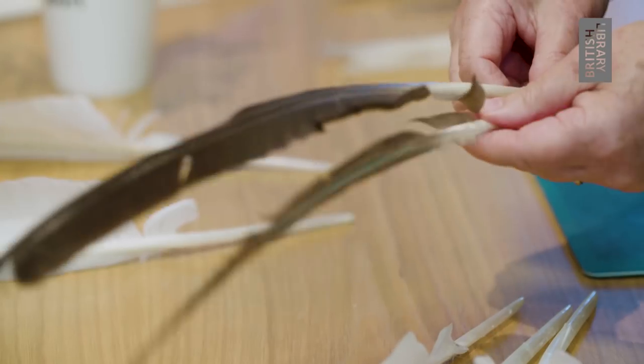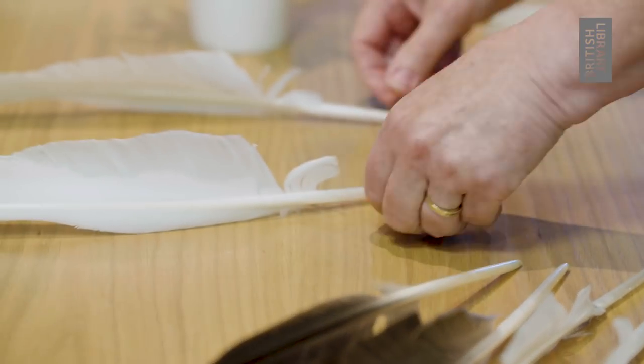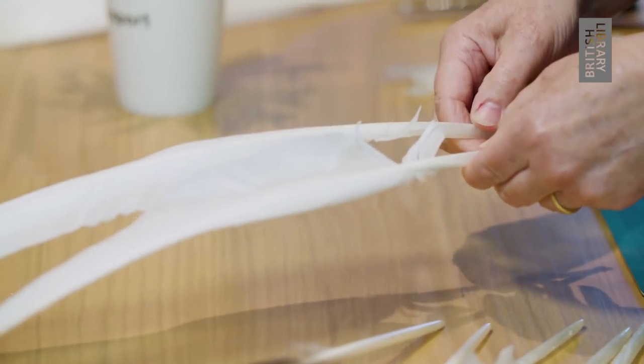We need large birds because we make pens from the barrels, and they need to be of a reasonable size to be able to cut a pen nib shape into it.